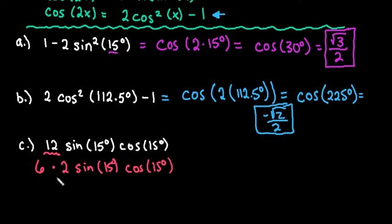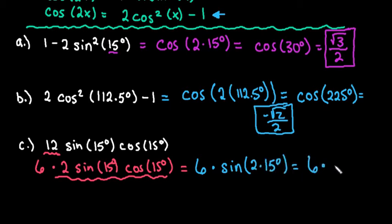So now we have the part that we needed. We just have to put a 6 in front of it. So we would say that this is really 6 times sine of 2 times 15. So this is really 6 times sine of 30 degrees.